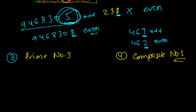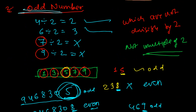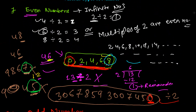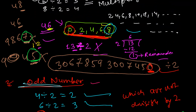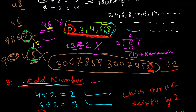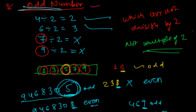Recently in a previous video, we learned about even numbers and odd numbers. Those numbers which are multiples of 2, or which can be divided by 2, are even numbers. You can also say all numbers which end with 0, 2, 4, 6, or 8 are called even numbers.